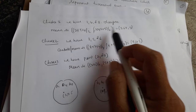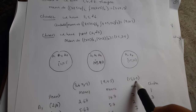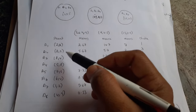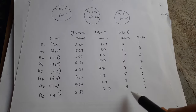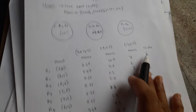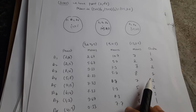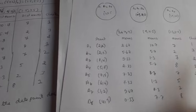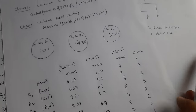We recompute the mean values for all clusters. Then we repeat the same process — for every data point, calculate which cluster center is nearest using Euclidean distance. Checking the new assignments against the previous iteration, none of the data points have changed their cluster. The assignments remain the same.